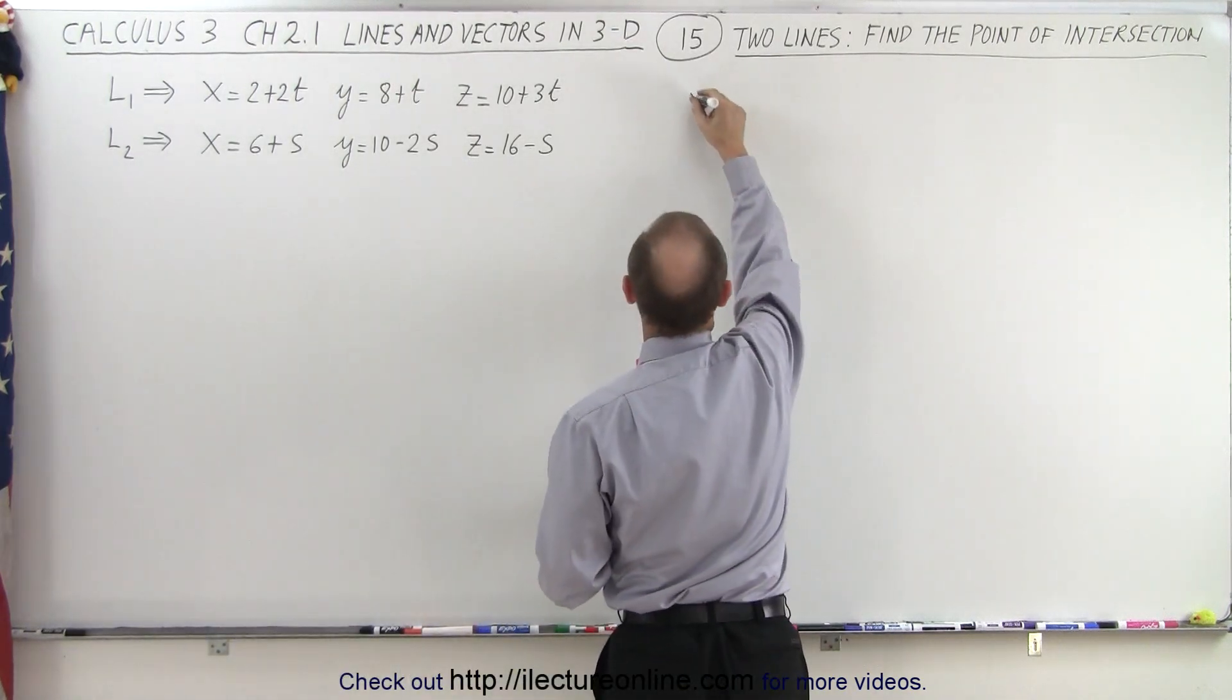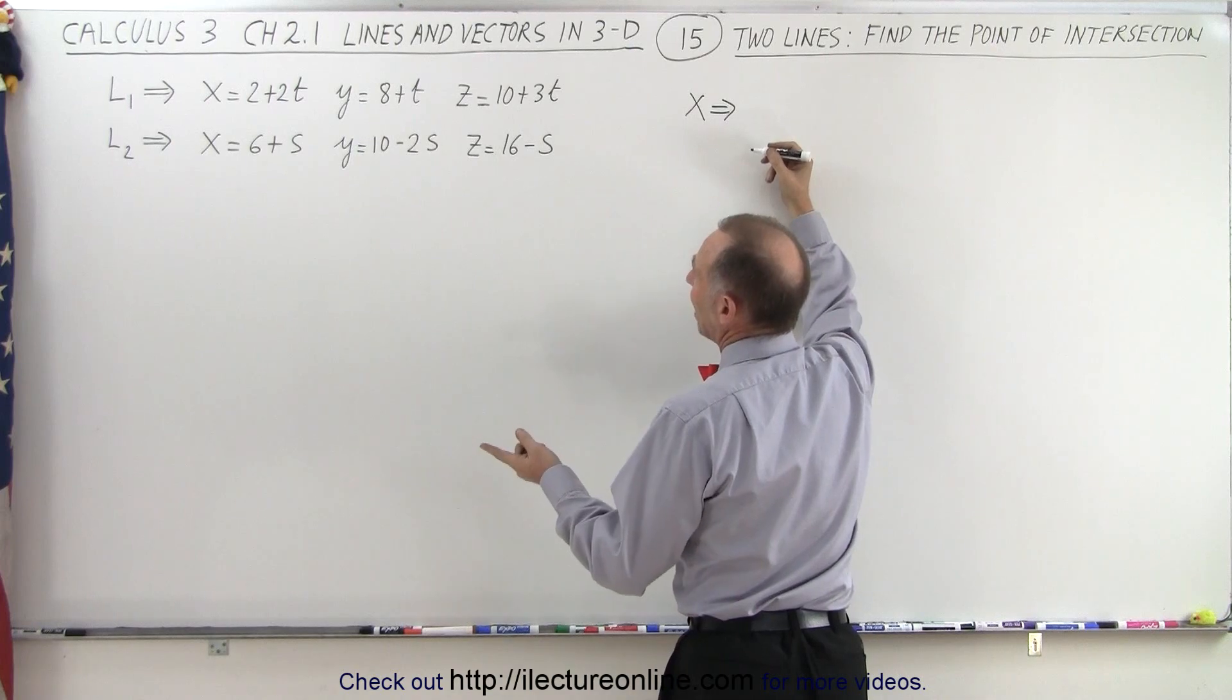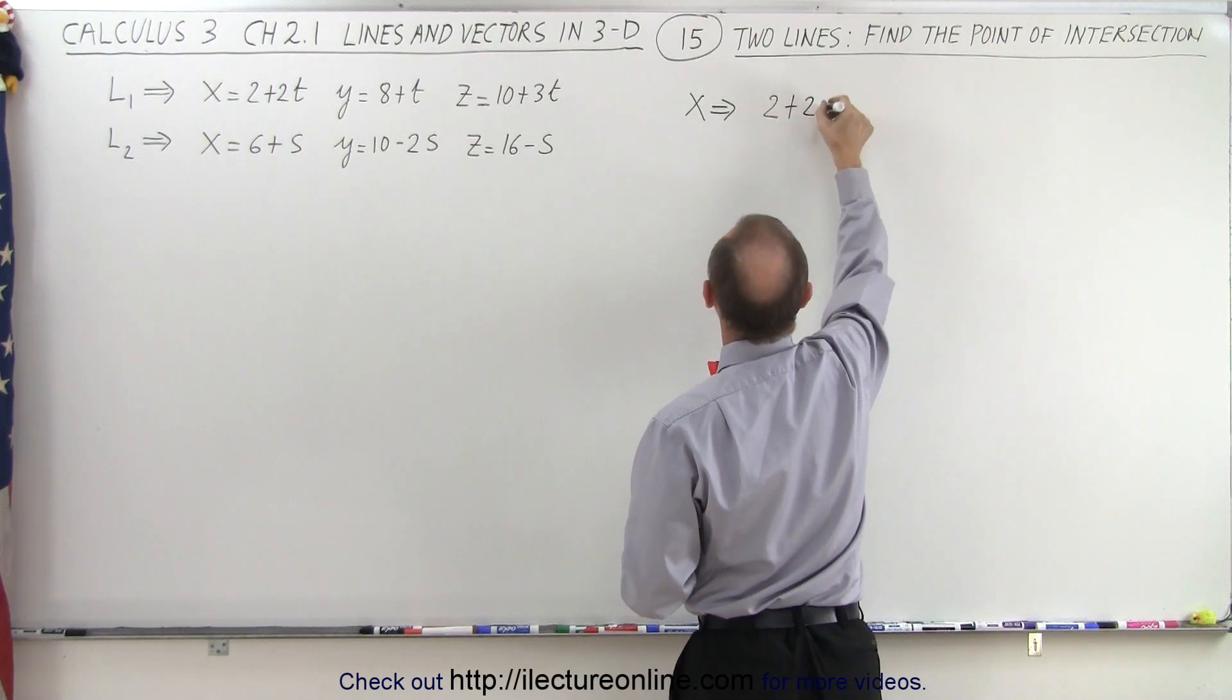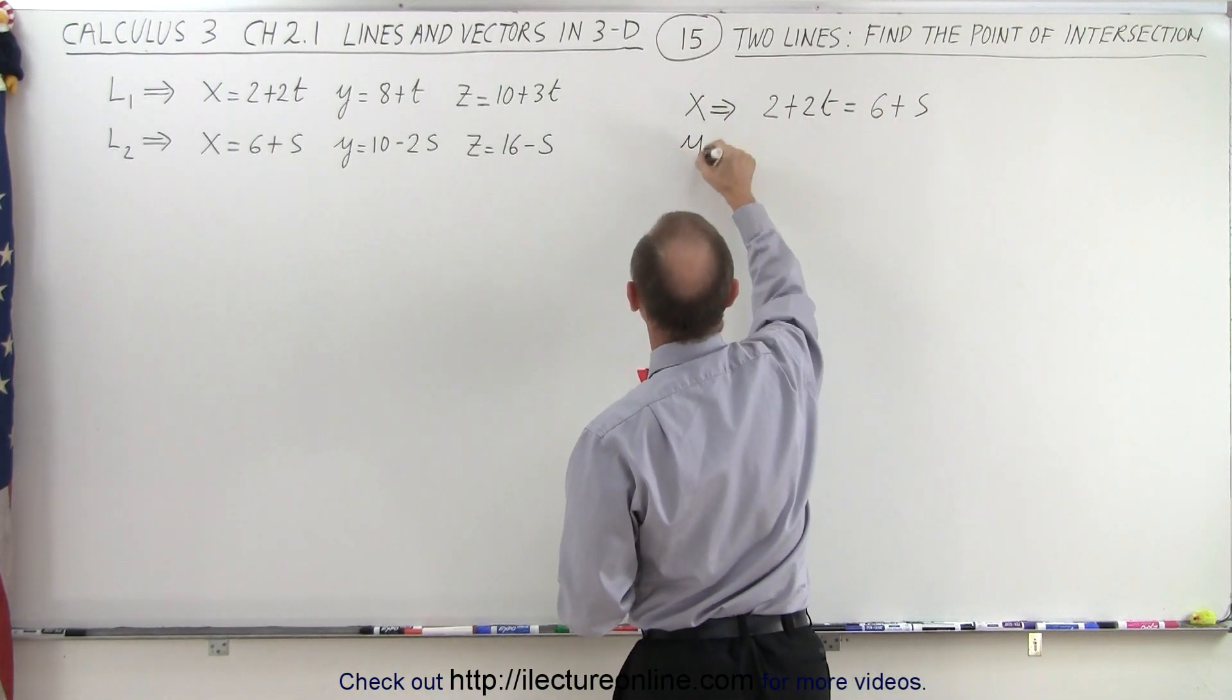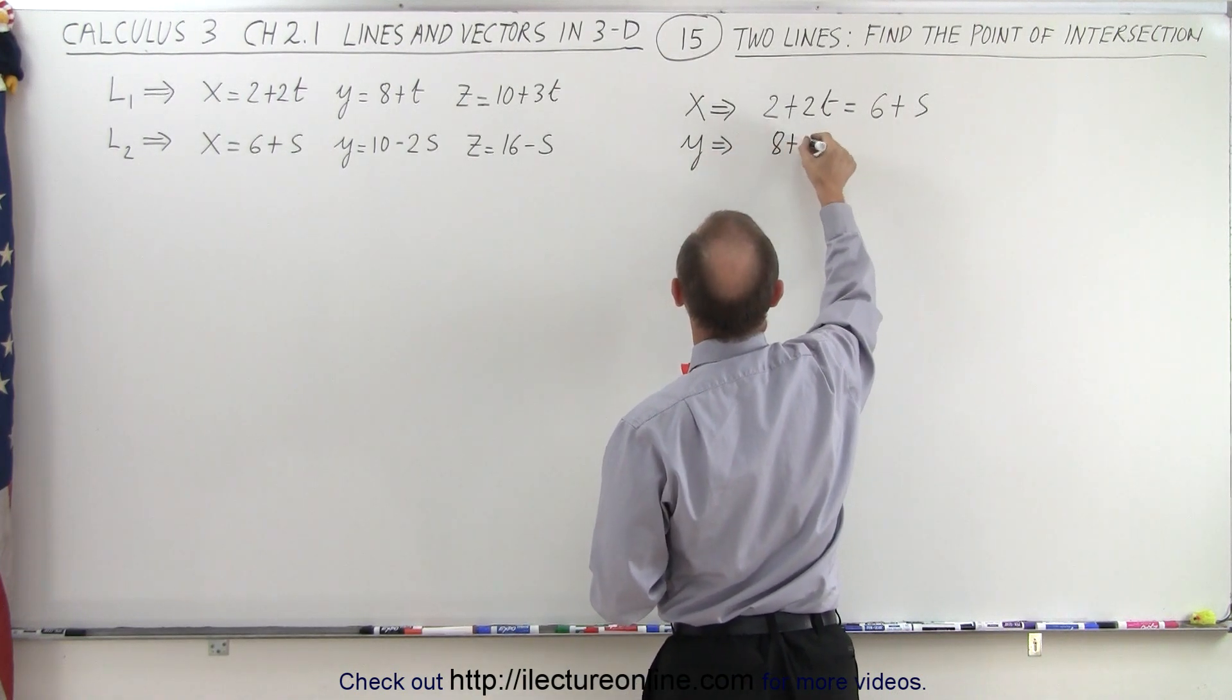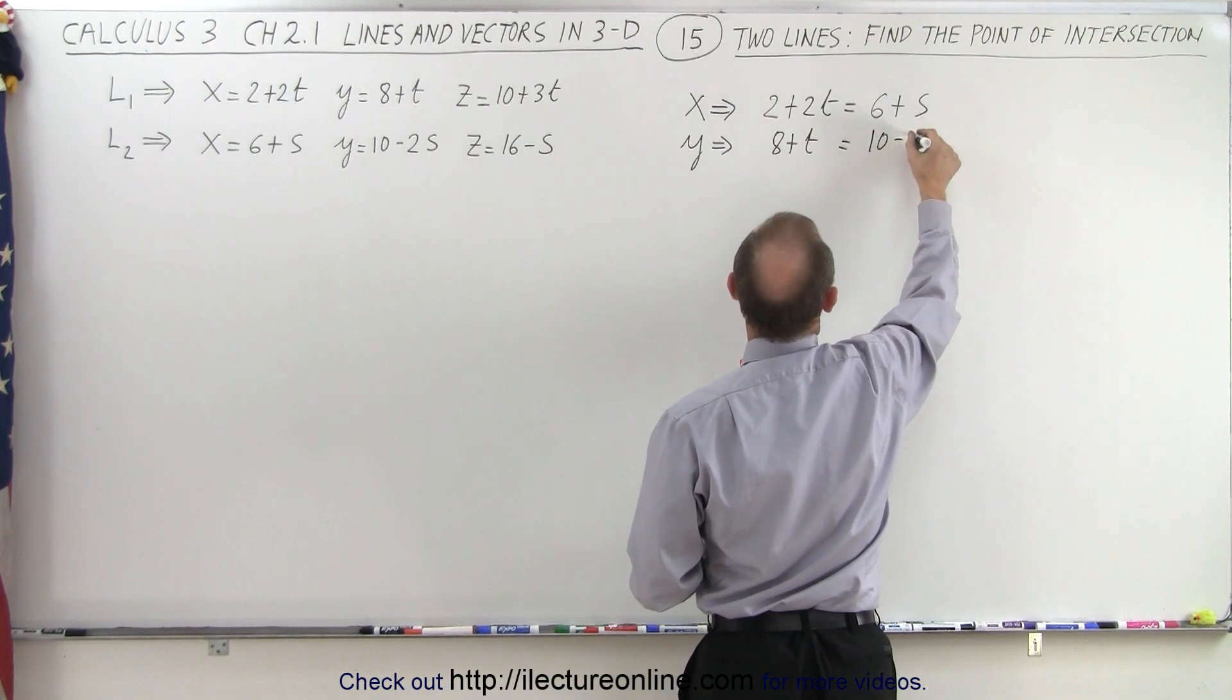When we set the x equal to each other, that means the x for one line must equal the x for the other line, which means that 2 plus 2t must equal 6 plus s. And if we set the y's equal to each other, that means that at the same time, 8 plus t must equal 10 minus 2s.